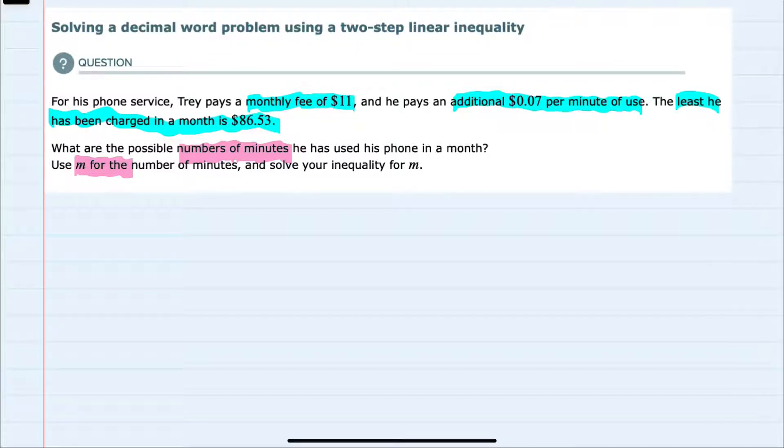So looking at the first part, we see that Trey has a monthly fee of $11. So each month, he's going to start with that $11. Then we're going to add $0.07 for each minute that he uses. So we're adding $0.07 times the number of minutes that he uses, M,